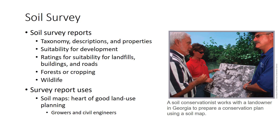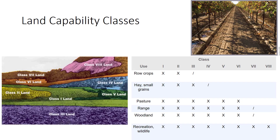It provides the potential for cropping, including capability class and woodland and wildlife suitability. Soil maps are the heart of good land use planning. Soil maps provide the information needed to make good land use decisions, whether the decision maker is a national planner, a farmer, home builder, or landscape designer. Soil surveys and maps provide the basis for placing soils into a variety of capability and limitation classes.